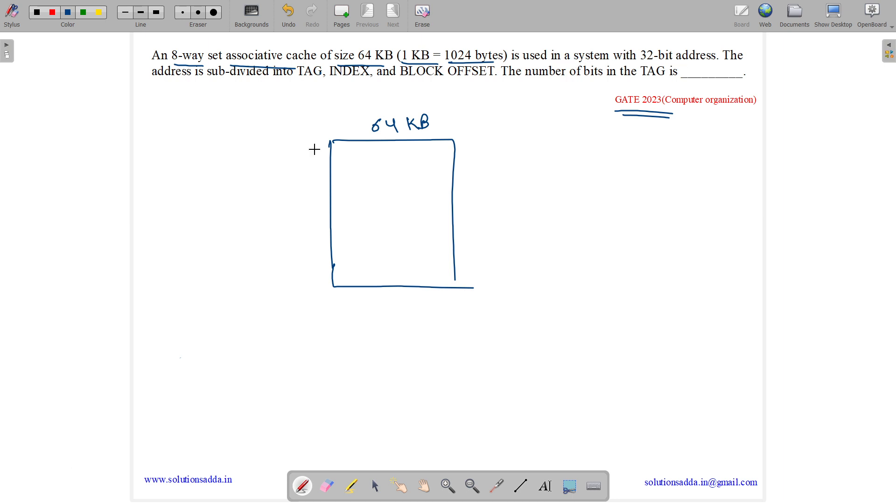It is used in a system with 32-bit address. The address is subdivided into tag, index, and block offset. We have 32 bits divided into these three parts: tag, index, and block offset.